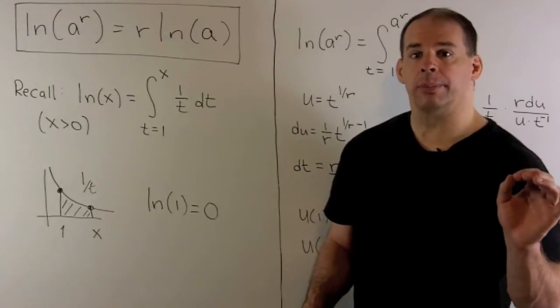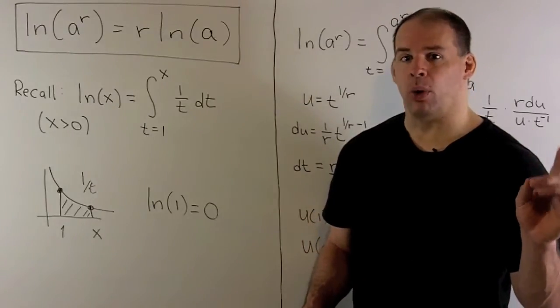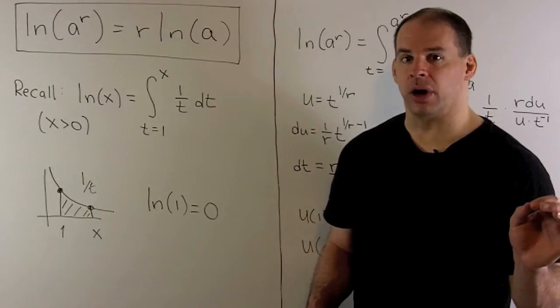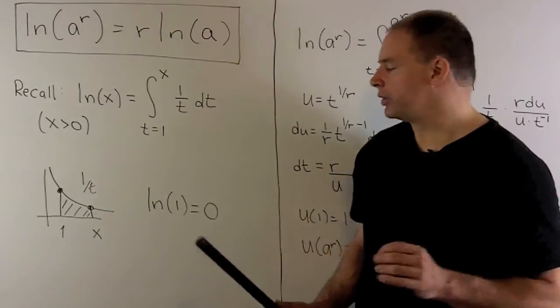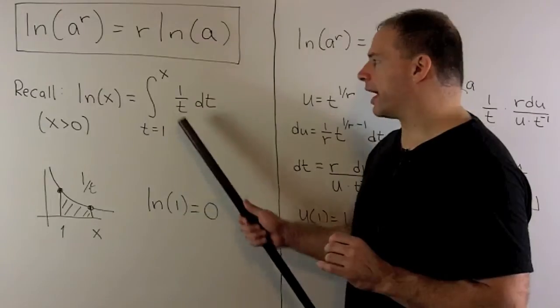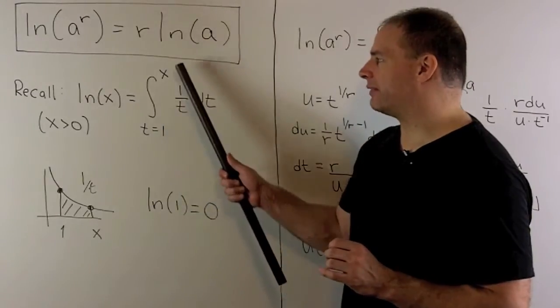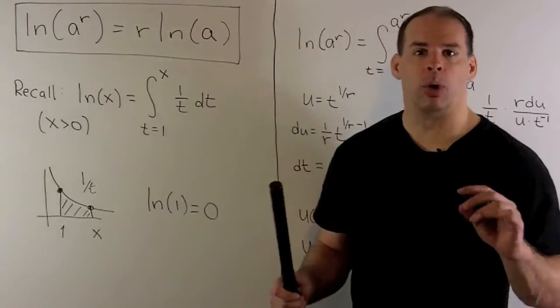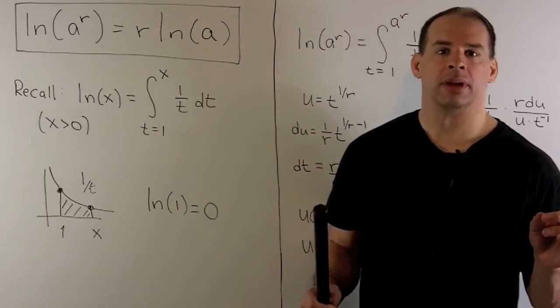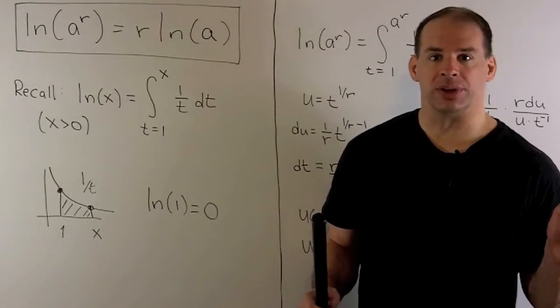We'll need later that natural log of one is equal to zero. If I put one in for x, we're just doing a definite integral from one to one, so that's always equal to zero.